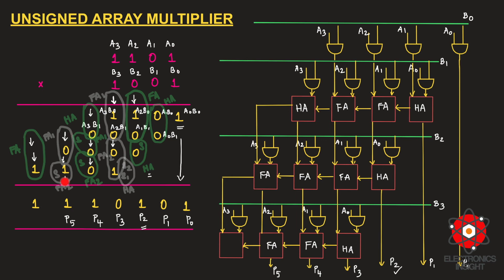With two full adders in this stage, two carries propagate to the next stage. Together with one remaining partial product bit, that gives three bits total, so one full adder is used for the last-stage addition. The sum of this full adder is p6, and its carry — which can be 0 or 1 — becomes p7.